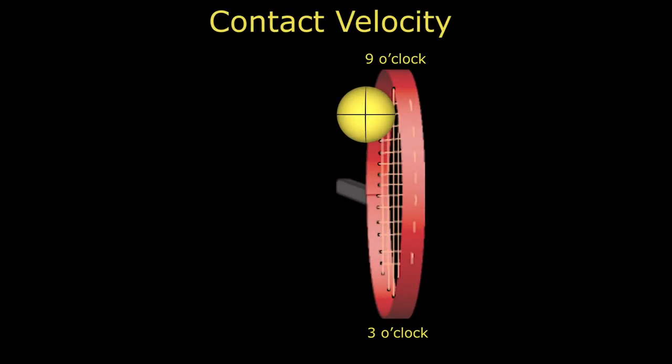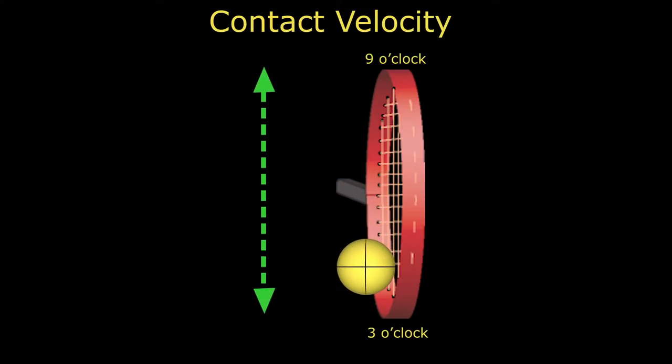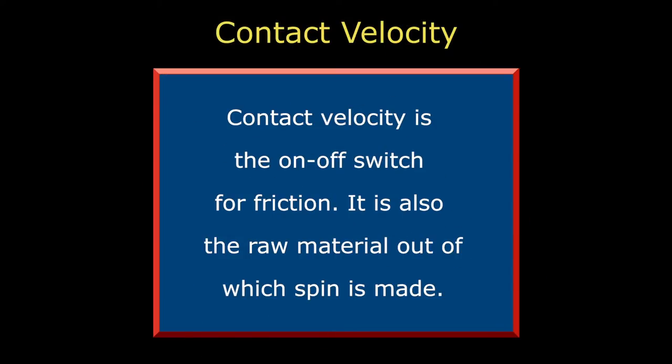Contact velocity refers to how fast the incident ball is moving across the strings due to both its linear and rotational speeds. By across the strings, we mean motion in a direction between 3 and 9 o'clock on the racket face. This motion, in turn, determines how long friction will continue to change spin and what maximum spin can be attained. In effect, contact velocity is the on-off switch for friction. It is also the raw material out of which spin is made.